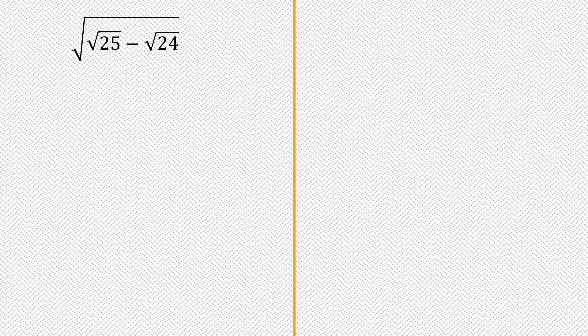The first thing we'll do is simplify the square root of 25 as 5. So I have the square root of 5 minus the square root of 24. And now I can break down the square root of 24 as well to 2 root 6. So the square root of 5 minus 2 times the square root of 6.